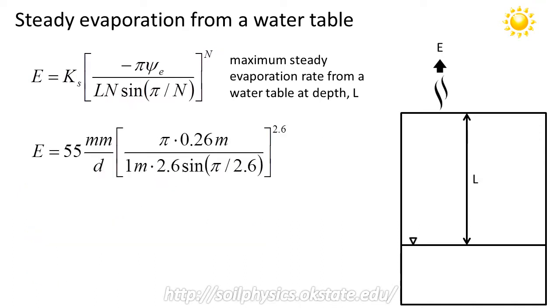So now I've plugged those coefficients into our equation. As you can see here, 55 millimeters per day is the K_s value. The depth of water table is 1 meter. The N exponent is 2.6. The air entry potential is 0.26 meters. Now notice the negative sign in the air entry potential, negative 0.26 meters, has canceled out the negative sign in front of the π.